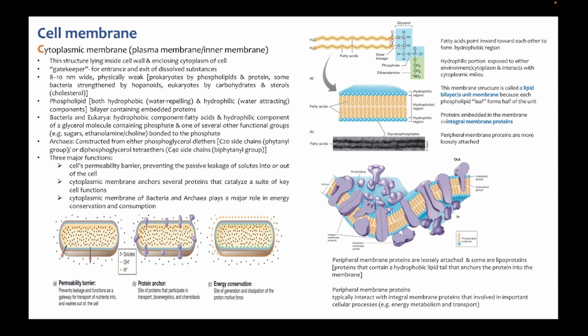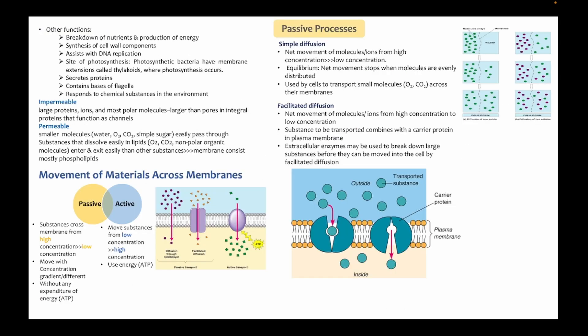The third function of the cytoplasmic membrane is energy conservation — specifically the proton motive force to generate ATP. For prokaryotic cells, bacteria and archaea, the site for ATP generation is the cytoplasmic membrane, as opposed to eukaryotic cells where the equivalent process occurs in the mitochondria. For movement of materials across the membrane, you have passive processes, which do not require energy, and active processes, which do.